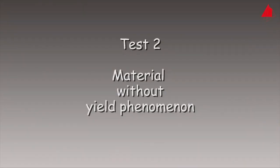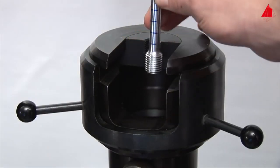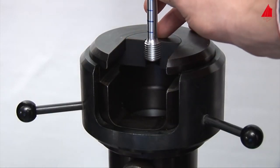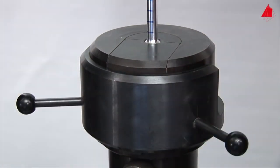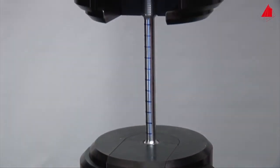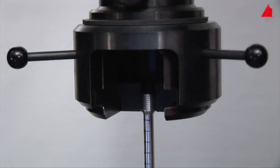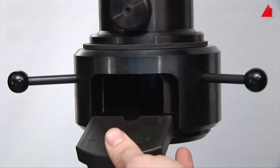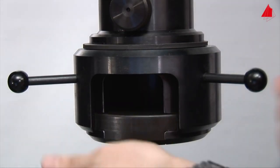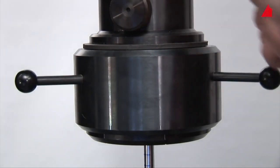In the second tensile test, a material without yield point phenomenon is to be tested. In this case it is a precipitation-strengthened aluminum alloy. The test piece has exactly the same shape and dimensions as the specimen in the first test. It is cylindrical with an original diameter of 10 millimeters and an original gauge length of 100 millimeters.